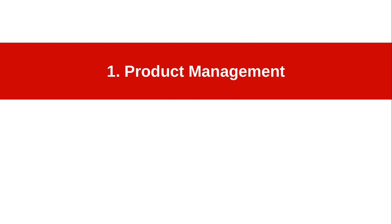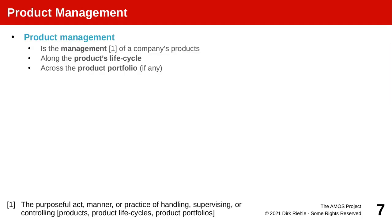First up: product management. Product management is the management of a company's products along a life cycle, usually as part of a product portfolio in larger companies. The management here is from the business perspective of making the product work for a market. If you're a consulting firm, you are more likely to have project management, often merged with engineering management, because you are performing client-specific projects. A project has a start and end date, while a product for a market is usually open-ended. Software vendors, also called product companies, are quite different from consulting companies.